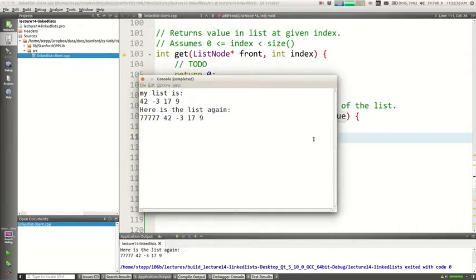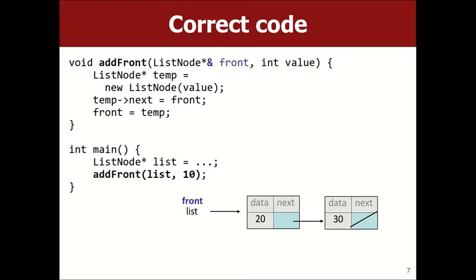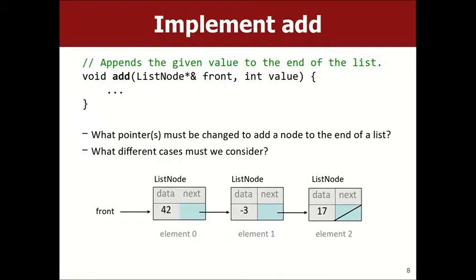Student question: what if we don't want to modify the front but another element in the middle of the list — do we still need to pass it by reference? That's a great question. The answer is sort of no but sort of yes, and by default if you're not sure, yes is a good choice. I'd like to write a function called 'add' — basically add to the back. Adding to the end of a vector is easy, but with a linked list it's the opposite. The front is the O(1) good case, but at the end you have to walk all the way by saying next, next, next in a loop to get to the end of the list.